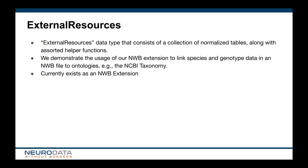To allow researchers to store a precise representation of a particular data or metadata value, we have extended NWB via a dedicated data store for external resources to support linking of human-readable, user-generated keys with identifiers from external references such as ontologies. This extension, external resources, is its own standalone data type and consists of a collection of normalized tables along with assorted helper functions to add, remove, and retrieve data.